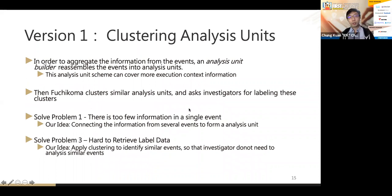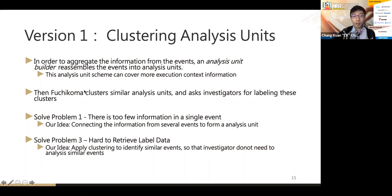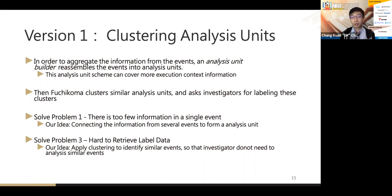Now knowing the four problems, we move to version one where we try to solve the weak-signal problem. Our idea: if we can connect information from several events and form an analysis unit, we can cover more contextual information and make better judgments. Fuchicoma version one will first aggregate information from events to build an analysis unit, then cluster similar analysis units. This clustering also helps solve problem three — hard to retrieve labeled data — because the investigator only needs to label each cluster rather than every individual event, saving much more time.